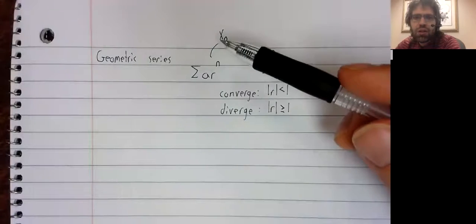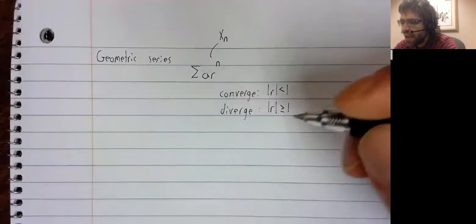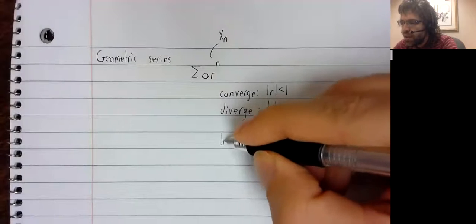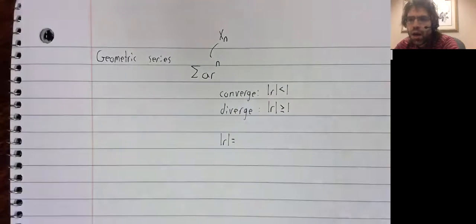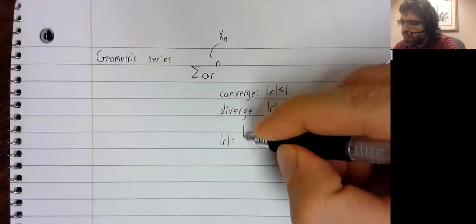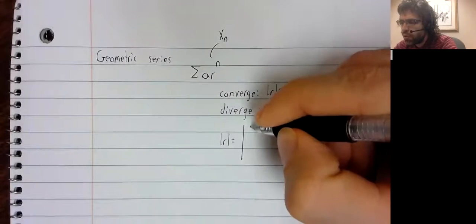That is to say, if you call the Nth term of this series X sub N, then the absolute value of R, which determines convergence and divergence,